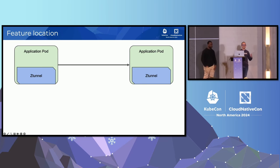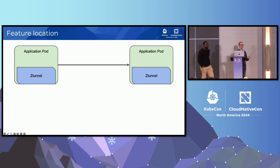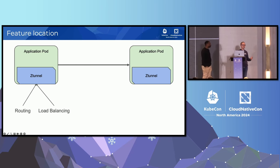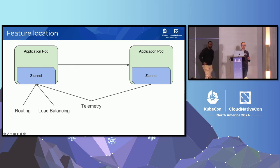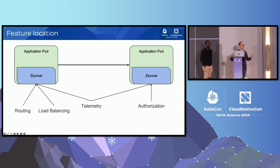As a recap: Z-Tunnel handles different responsibilities on each side. On the outbound side it does routing, load balancing for service calls, and telemetry collection. On the server side it also collects telemetry — useful to correlate who I'm talking to and who is talking to me, which are two very different things — and applies authorization policy, such as accepting only encrypted traffic or allowing only specific applications to communicate.